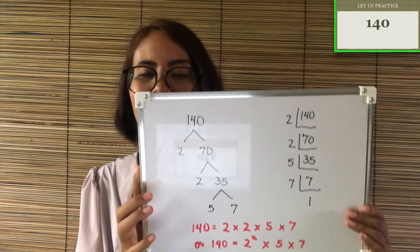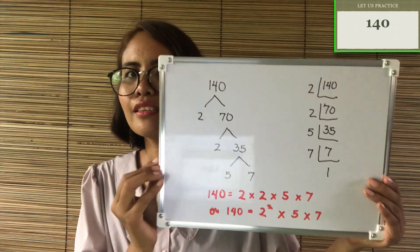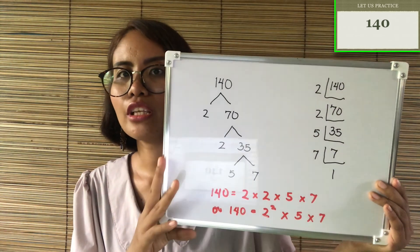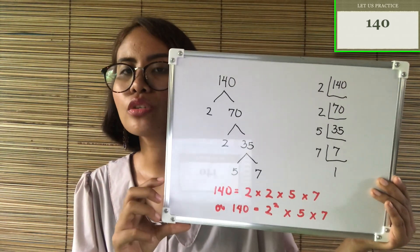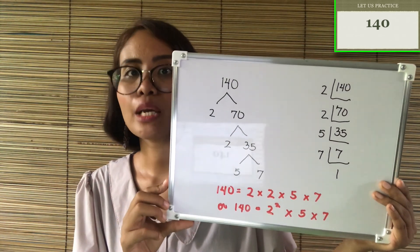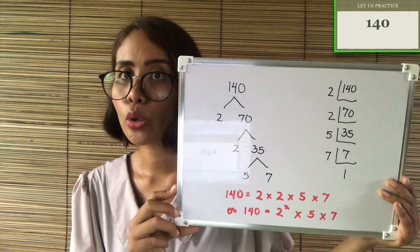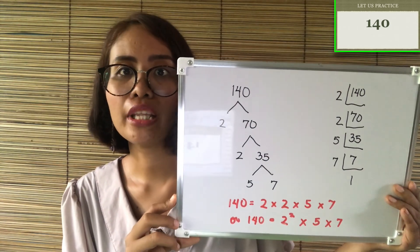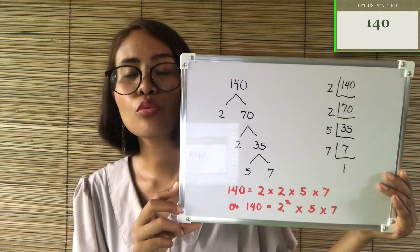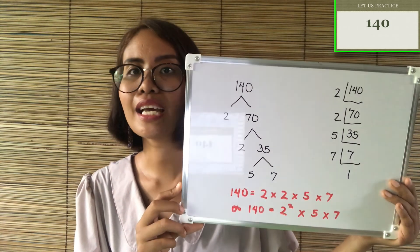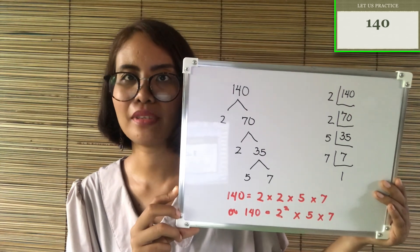Here is the answer for 140: 140 equals 2 times 2 times 5 times 7, or 140 equals 2 squared times 5 times 7.